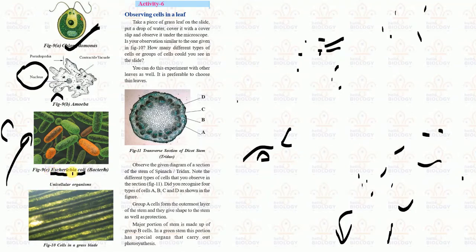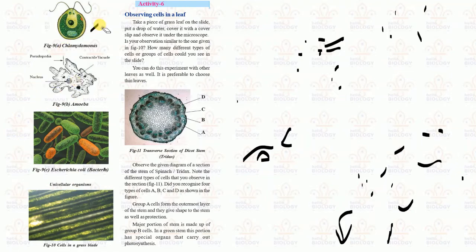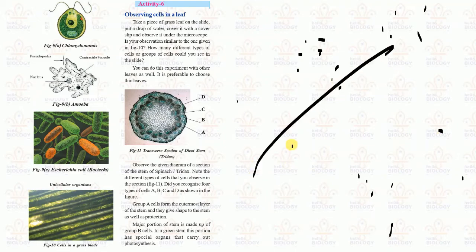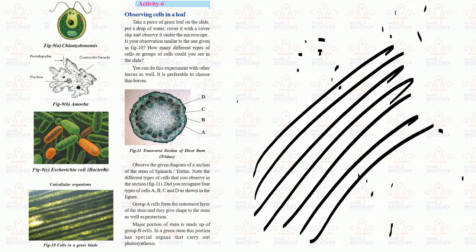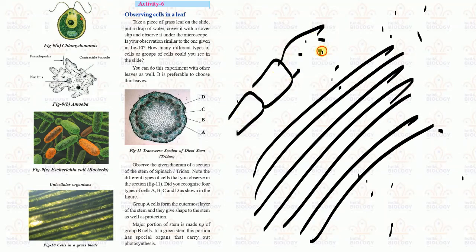Scientific names have two parts: the first word starts with a capital letter and the second with a small letter - for example, Escherichia coli. This bacterium is present in our intestine. Grass blades, when placed under a microscope, reveal blade-like cell structures similar to what we observed in onion cells.